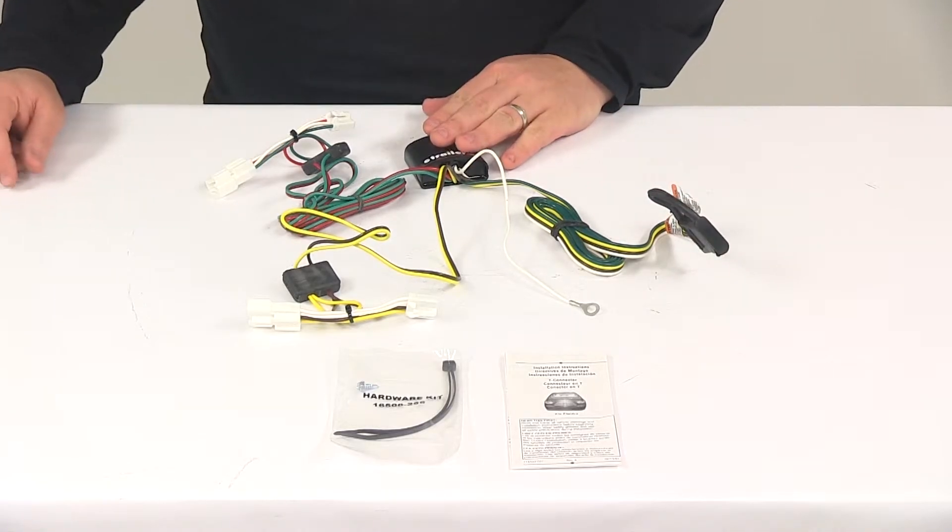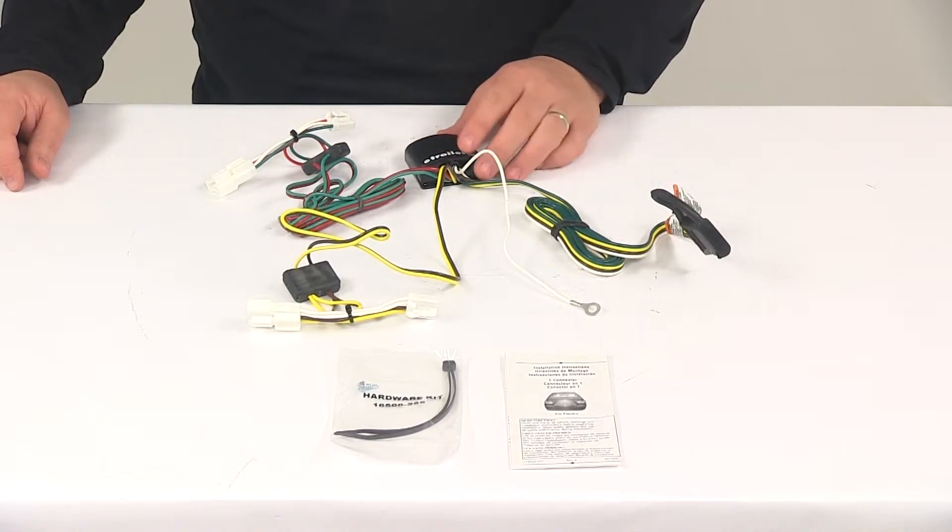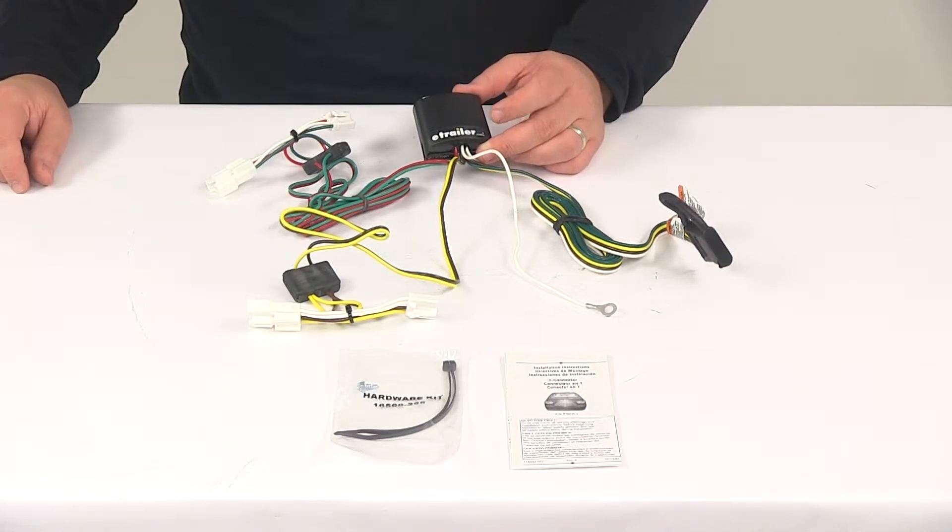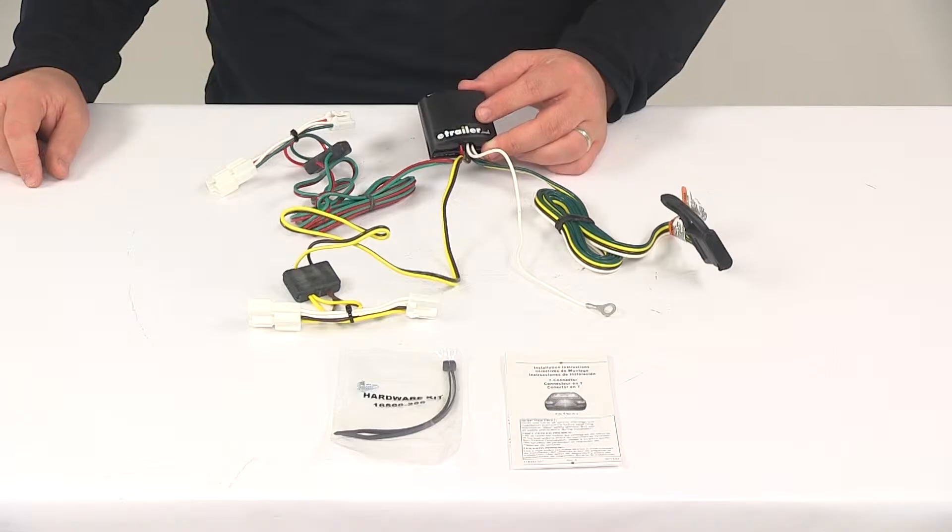It comes with a circuit protected tail light converter. This ensures that your vehicle's wiring matches that of your trailer. The unit provides protection against electrical shorts and overloads.